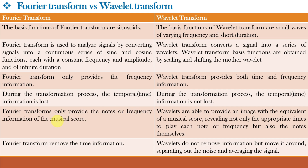Fourier transforms only provide the notes or frequency information of a musical score. For example, the Fourier transform of musical notes sa, re, ga, ma, pa, dha, ni sung in one order will be identical to the same notes sung in a different order, because the notes are sung at different times but the frequency content is the same — meaning time information is lost. Wavelet transform, however, provides an image with the equivalent of a musical score, revealing not only the appropriate time to play each note or frequency but also the notes themselves. Fourier transform removes the time information; wavelet transform does not remove it but moves it around, separating out noise and averaging the signal. So wavelets have very important applications in noise removal, averaging and image compression.